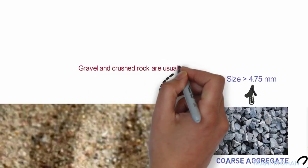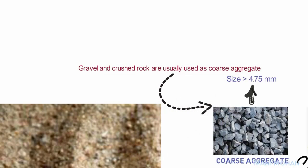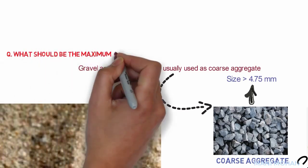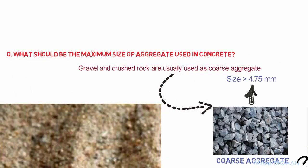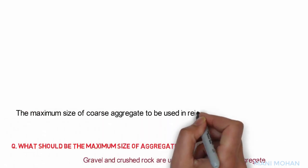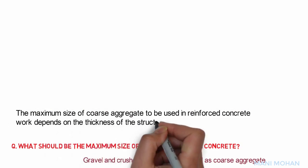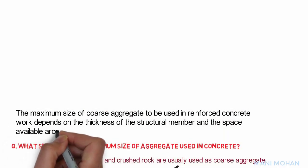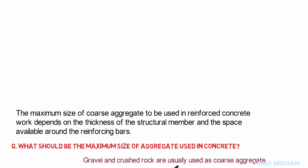Gravel and crushed rocks are usually used as coarse aggregate — aggregates with size larger than 4.75 mm. The maximum size of coarse aggregate to be used in reinforced concrete depends on the thickness of the structural member and the space available around the reinforcing bars, and one can specify the maximum size of aggregate accordingly.